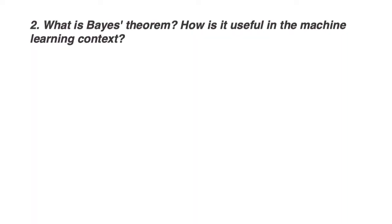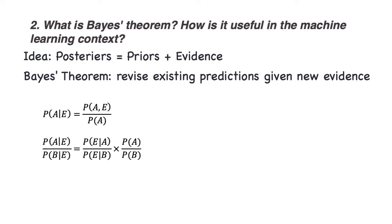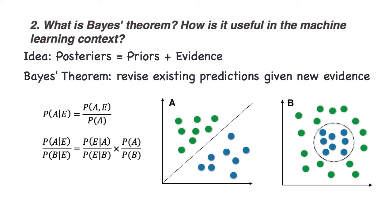What is Bayes' theorem, and how is it useful in the machine learning context? Bayes' theorem allows us to determine posterior probabilities from our priors, when presented with evidence. Or more simply, a method of revising existing predictions given new evidence. So how much more likely A is than B now, is equal to how much more likely A was than B before we saw our new evidence, times how much more likely this evidence would be to occur if A were true, than if B were true. In machine learning, Bayes' theorem forms the fundamental assumption of the naive Bayes classifier, a generative model for classification.